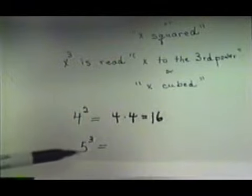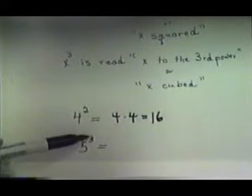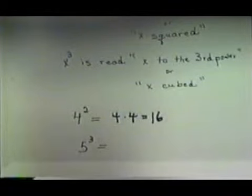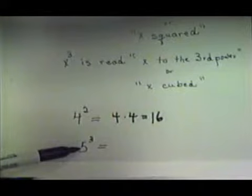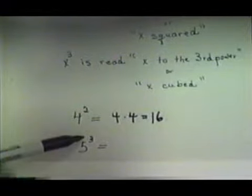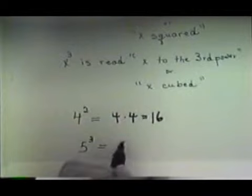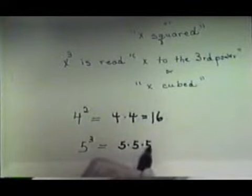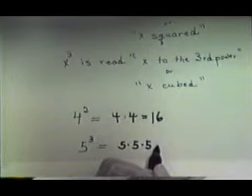Let's do another one. This one, our exponent is a three, so we read that five to the third power, or five cubed. So since our base is five, it means five is a factor three times. So we'd write the five down, and we'd write it down three times, and then we need to multiply that out.